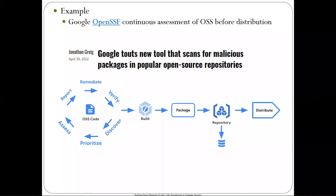Google's OpenSSF initiative aims to scan all popular open source software repositories continuously, assessing and remediating vulnerabilities as they're discovered. This covers almost everyone's supply chain since Google uses a lot of open source in their products. When distributing software internally, this allows them to ensure their tooling is hardened against known vulnerabilities.